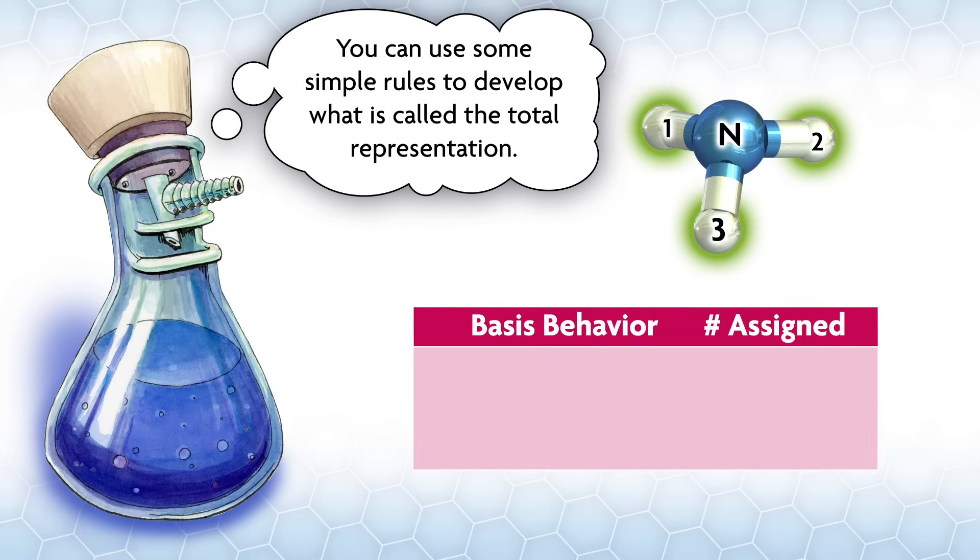By choosing different bases, you can answer many different questions about molecules with group theory. For MO theory, your basis is usually some group of atomic orbitals. Our basis for the hydrogen SALCs will look like this, with the hydrogen s orbitals numbered 1 through 3. For this problem and many problems, you can use simple rules to develop what's called the total representation.